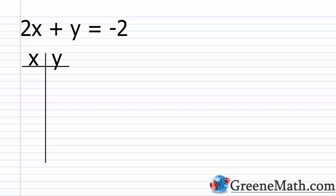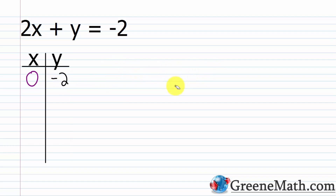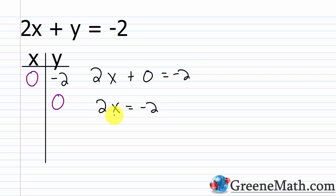We're going to start out with 2x plus y equals negative 2. I'm going to use the intercept method. That's where you plug in a 0 for x — that gives you your y-intercept. So we'd have 2 times 0 plus y equals negative 2, so y equals negative 2. Then I'd also use the x-intercept: plug in a 0 for y, giving me 2x equals negative 2, so x equals negative 1.